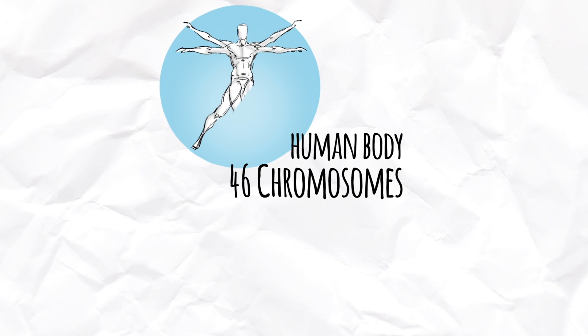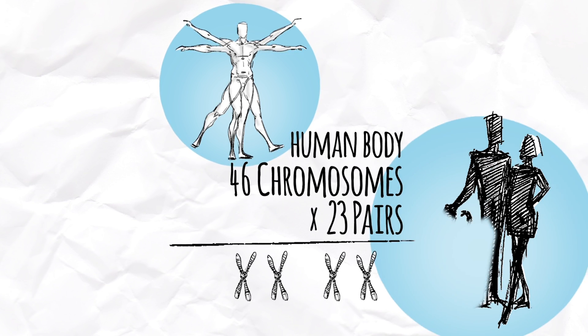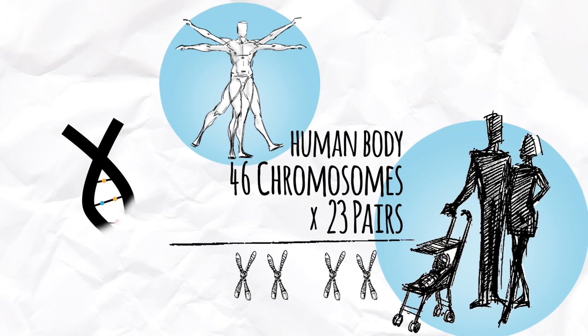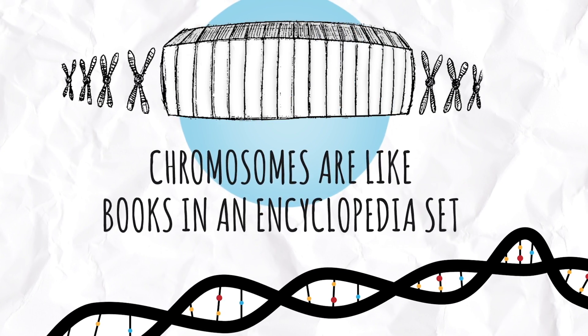The human body is made up of 46 chromosomes that come in 23 pairs, one set from our mother and one set from our father. Chromosomes are like different books in an encyclopedia set; each book carries different information, yet altogether they make up a very important reference set.